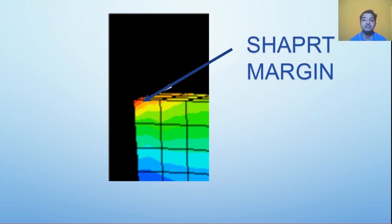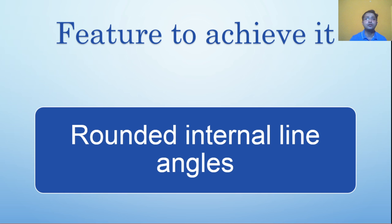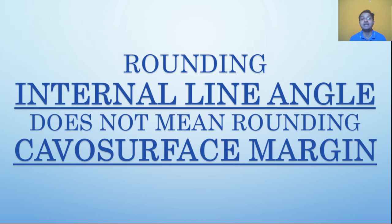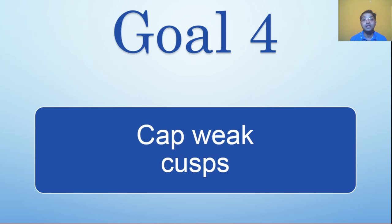Goal 3 is to reduce stress concentration in the tooth structure. Research images show that wherever you have sharp margins there will be a lot of stress concentration. To reduce it, we have to round down the internal line angles. Please note that rounding the internal line angles does not mean rounding the cavosurface margin — we are talking about the internal walls inside the cavity preparation, which should be rounded so force does not concentrate.